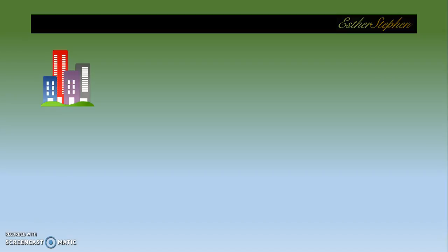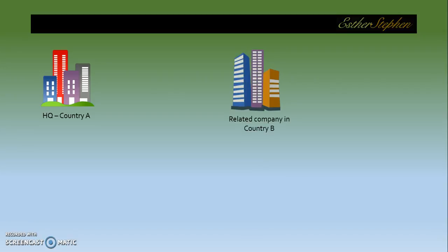Let's start with an example. Let's say we have a company headquartered in country A as well as another company in country B, and there is a relationship between these two companies. By relationship we mean that the headquarters can actually influence the decisions of the related company in country B. For the sake of simplicity, company B is a subsidiary of company A. Now A provides consultancy services to company B and invoices them for service income. This is a common enough scenario in a lot of MNCs, and for company B this would simply be an operational expense.